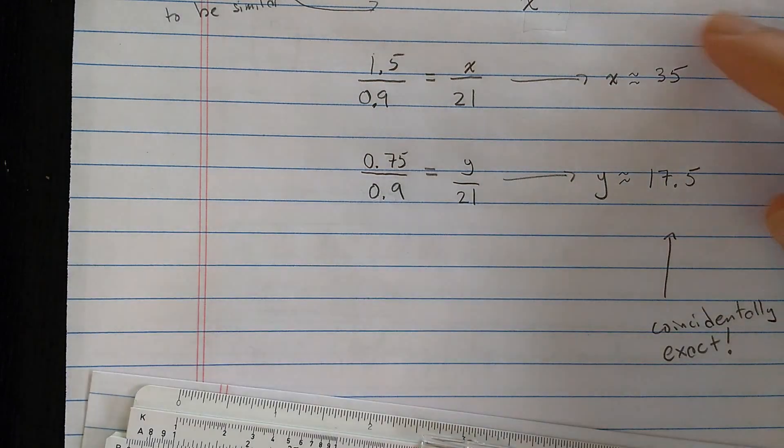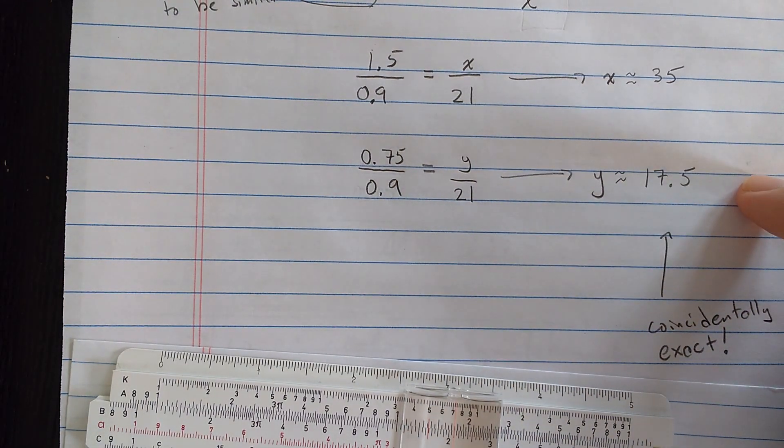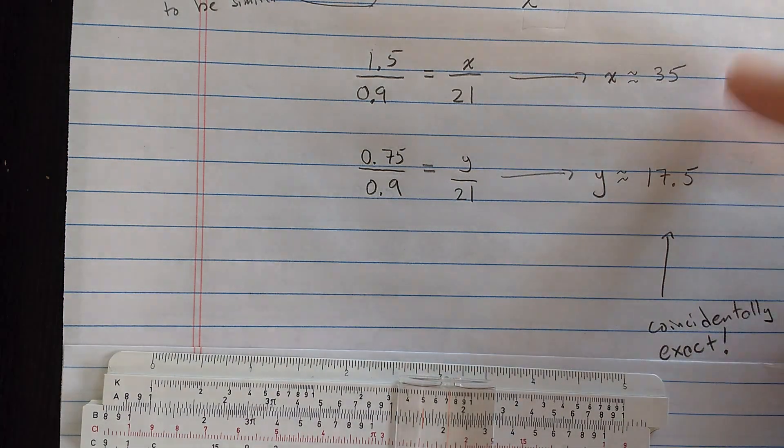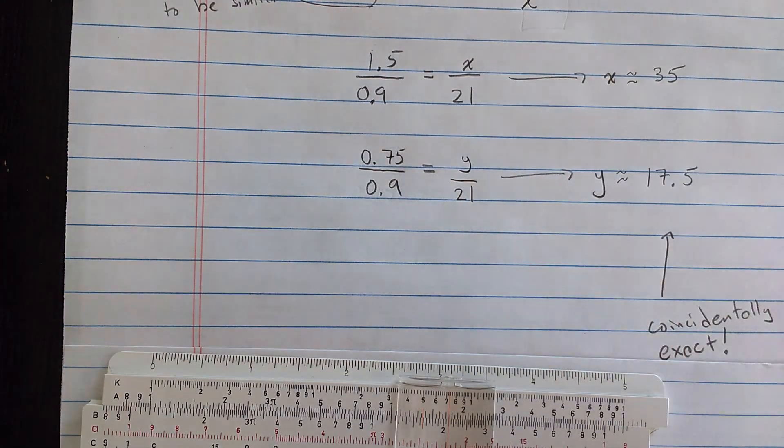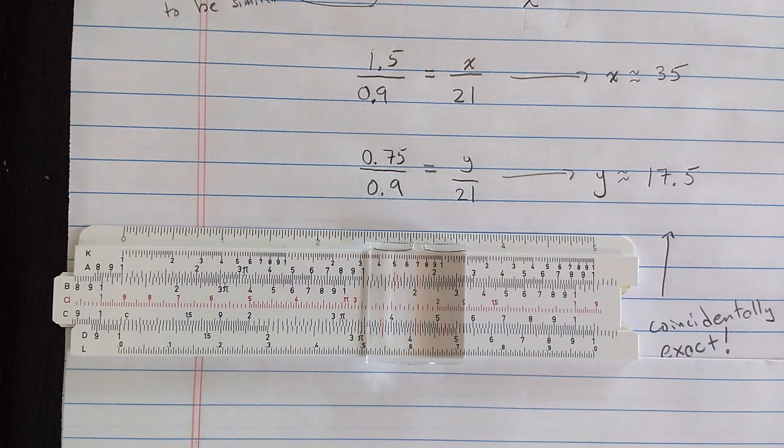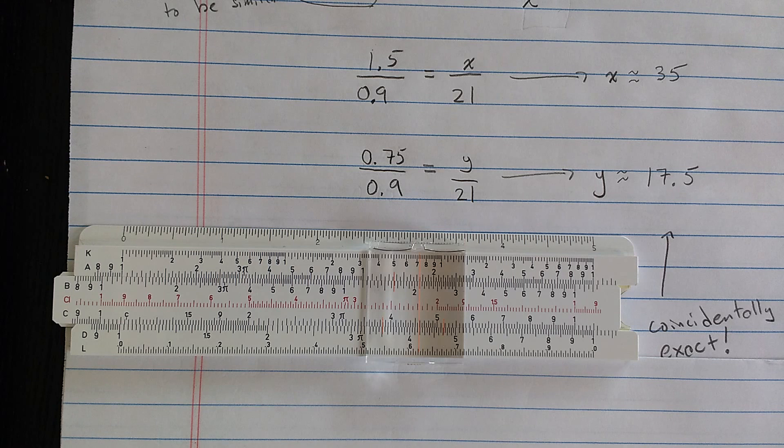Now, an interesting thing about these calculations are these are actually exact, but we have no way of knowing that without repeating them by hand. Just so happened that these are exact numbers, but that's a coincidence. The best we can know is that they're approximations while we're using a slide rule. Hope you enjoyed the explanation of how to do proportions on a slide rule. And join me for the next video.